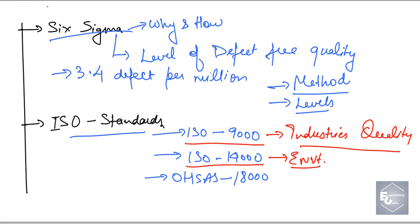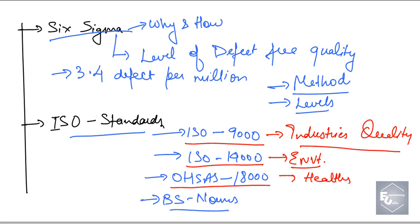Then comes OHSAS 18000. These standards tell us about what measures are to be followed for the proper health of workers. The steps and measures written in it are to be followed so that there are no health hazards in the industry. Then comes the BS Norms, which are also in current affairs. These are standards to be followed by automobile industries for their engines to control pollution. BS Norms 5 have been implemented in the country, and there are chances it will be asked in the exam, so we will read it in detail.